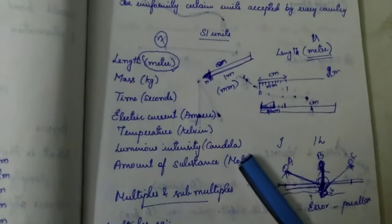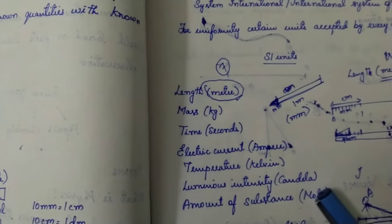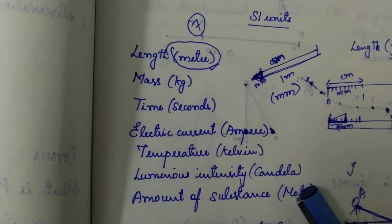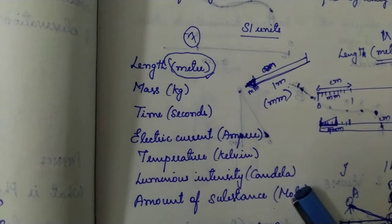Next topic we are going to cover is SI unit. What is SI unit? SI unit stands for Système International, or International System of Units. Like every country follows certain systems of units for calculation, for simplicity and uniformity every country has accepted seven basic units used internationally — they are called SI units. The seven SI units are: length measured in meter, mass in kilogram, time in seconds, electric current in ampere, temperature in Kelvin, luminous intensity in candela, and amount of substance in mol.